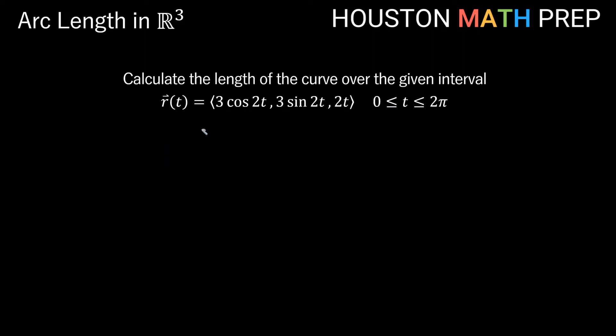So we'll go ahead and call our arc length s, because most textbooks use s, and that makes sense because arc length starts with s. So that's going to be, remember, the integral from a to b of our magnitude of the derivative dt.